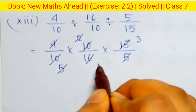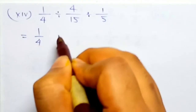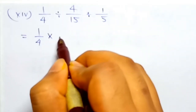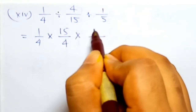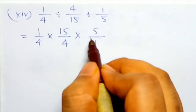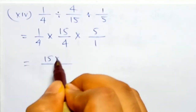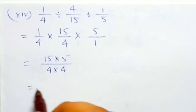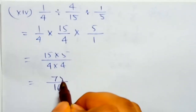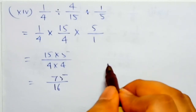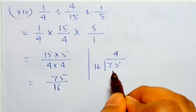Sorry — for 16, divide: four times. So answer is three by four. One by four — divide becomes multiplication — reciprocal is 15 by 4. Next, divide becomes multiplication. Numerator: 15 into 5. Denominator: 4 into 4 into 4 — total 64. Fifteen into five is 75.